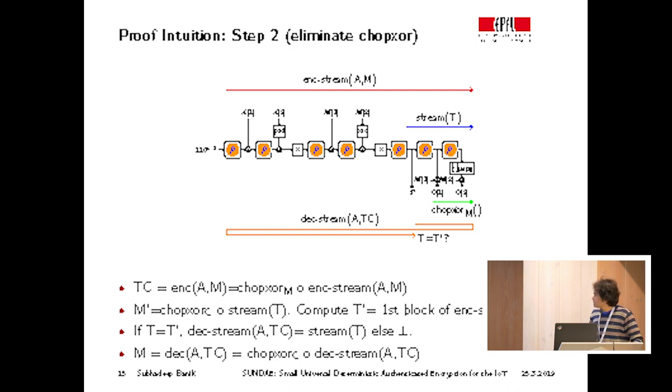And we can similarly describe a dec_stream algorithm, which proceeds in this roundabout manner. Given an input (t,c), it first computes stream, produces keystream, then applies chop_xor with the ciphertext to get some message m', and then it comes back over here and again runs the enc_stream algorithm for a,m', and then it looks at the output t' that it has produced. If t equals t', then the tag has verified, and in such an event it releases the output stream; otherwise it releases nothing. And so the decryption algorithm is also the enc_stream composed with this chop_xor algorithm.